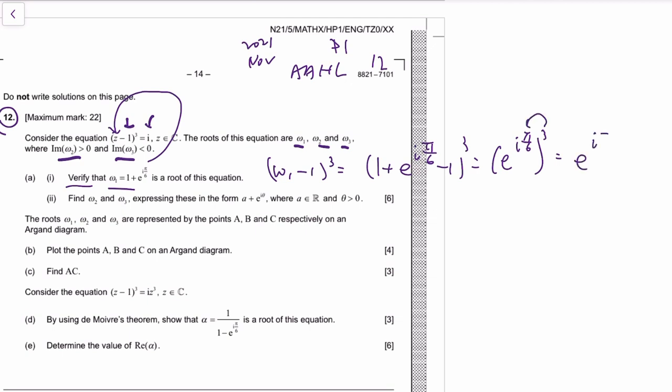So you multiply 3 to the power, just like law of indices—3 times pi over 6, that's pi over 2, and that's obviously i, because on the Argand diagram you turn 90 degrees with a modulus of 1, that's i.